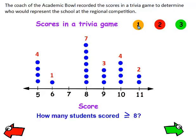Let's answer some questions. How many students scored greater than or equal to 8? Here's the number 8 — these students scored 8, and these scored greater than 8, and also greater than 8. So you would add up 7 plus 3 plus 4 plus 2, because all of these students scored greater than or equal to 8. And that's 16 students.